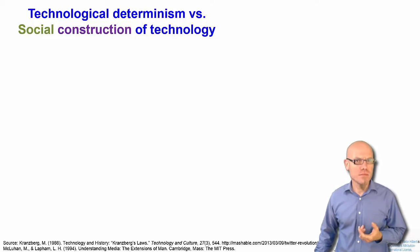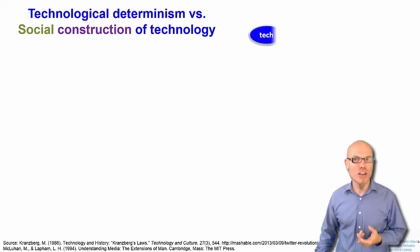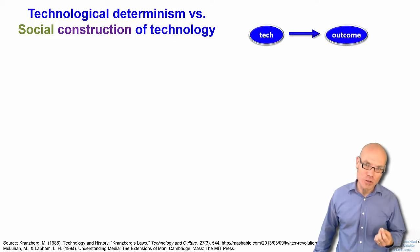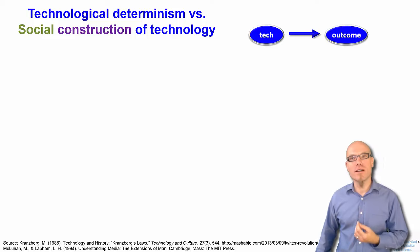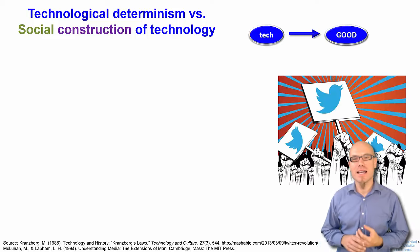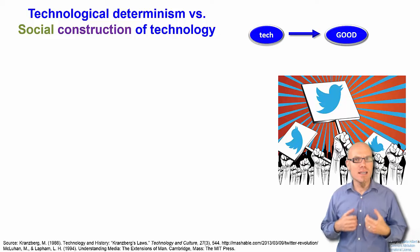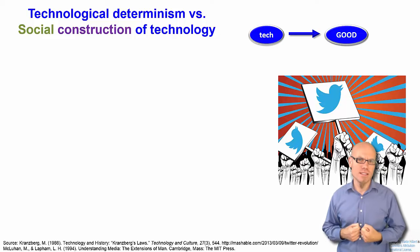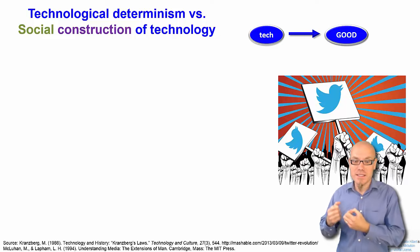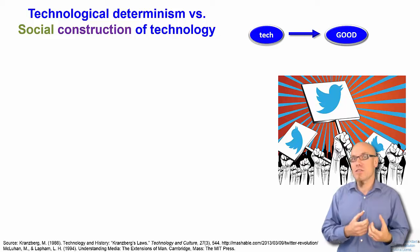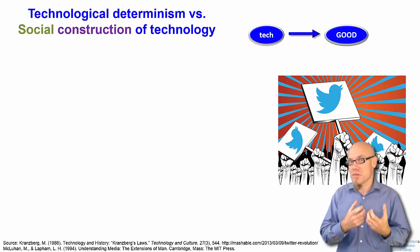Technological determinism means that the technology determines the outcome, hence the name technological determinism. For example, when somebody says the internet implies freedom and democracy, so the internet is inherently good, that means that the internet determines the outcome — it's good, it implies freedom and democracy.